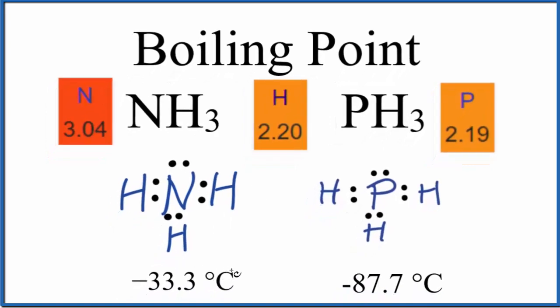Ammonia here, that boils at negative 33.3, where PH3, negative 87.7. This is a very low temperature. So PH3 has a much lower boiling point. You could also say that NH3 has a higher boiling point than PH3.